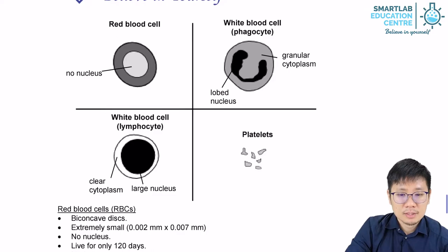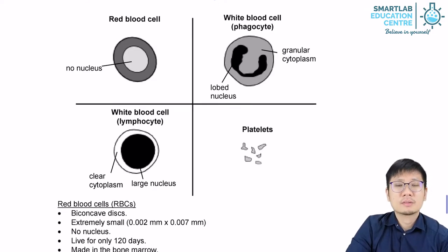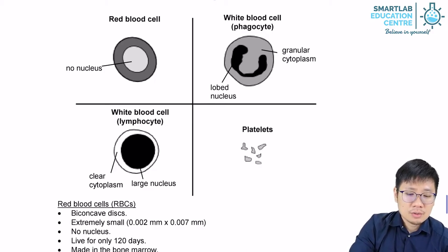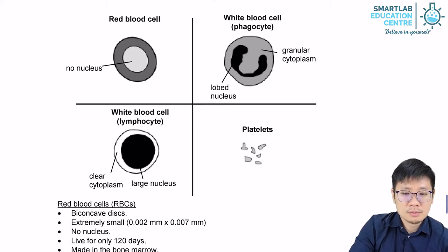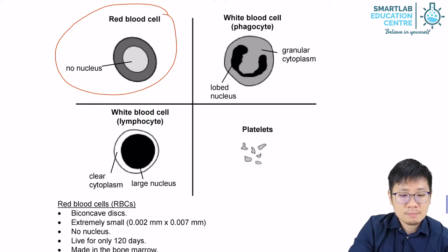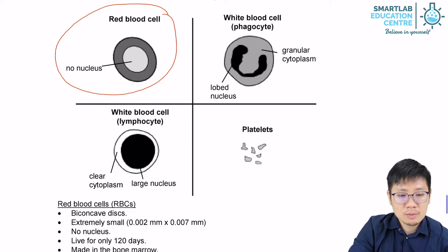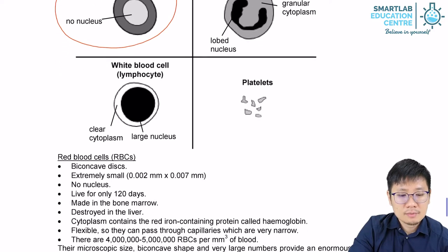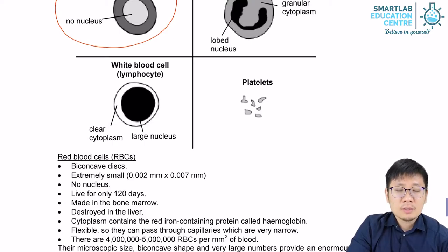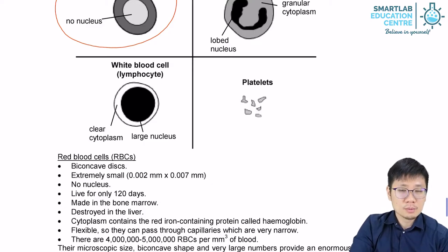Now let's talk about the cells in the blood. There are three main groups. Red blood cells are biconcave in shape, they have a very small size, and they have no nucleus. They are quite famous for having no nucleus — this is an adaptation so that the cell can hold more hemoglobin.